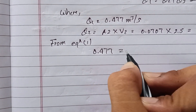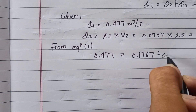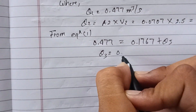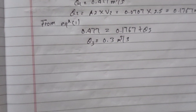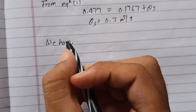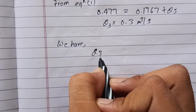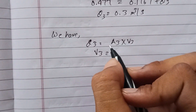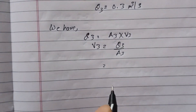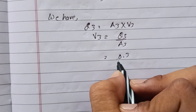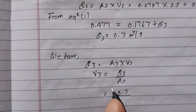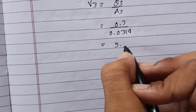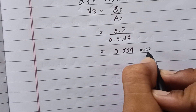From the continuity equation: 0.477 equals 0.1767 plus Q3. Therefore Q3 equals 0.3 meters cubed per second. Finally, the velocity V3 equals Q3 divided by A3, which is 0.3 divided by 0.0314, giving V3 equals 9.554 meters per second.